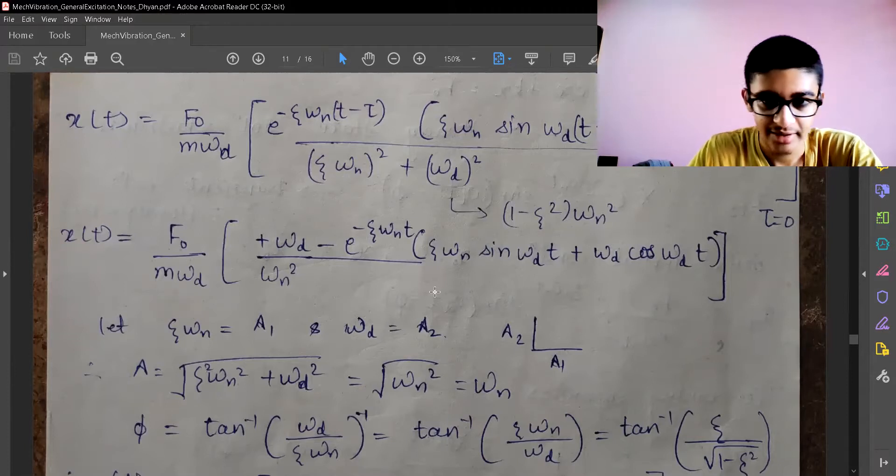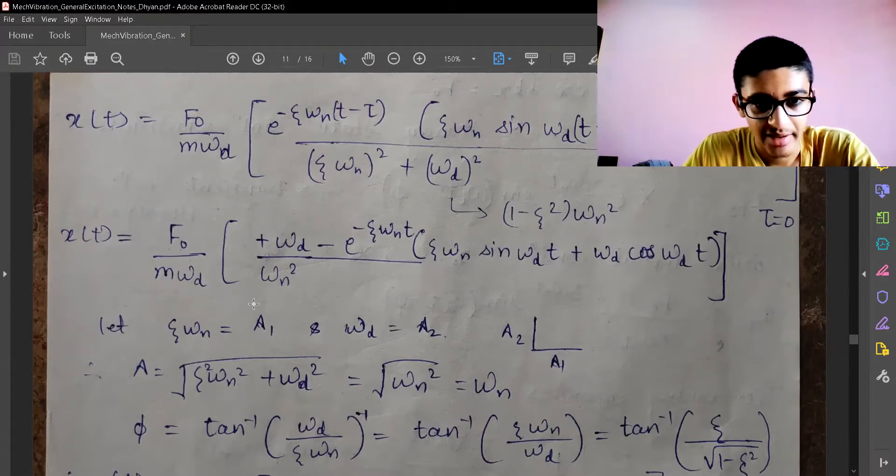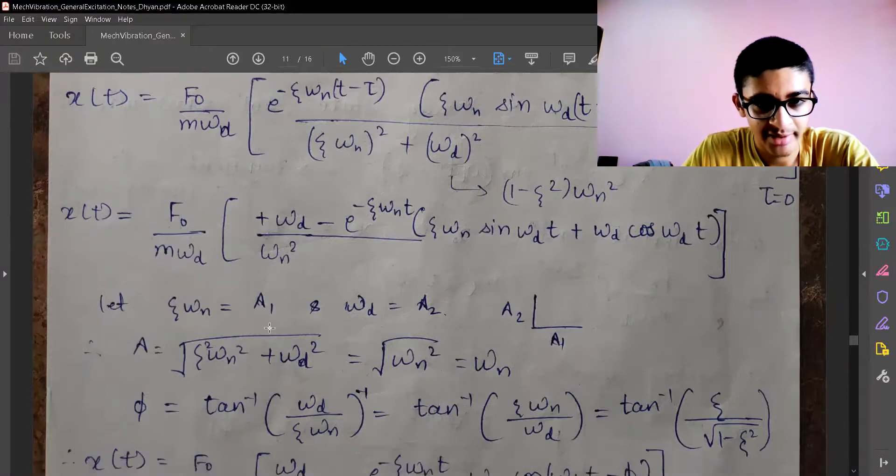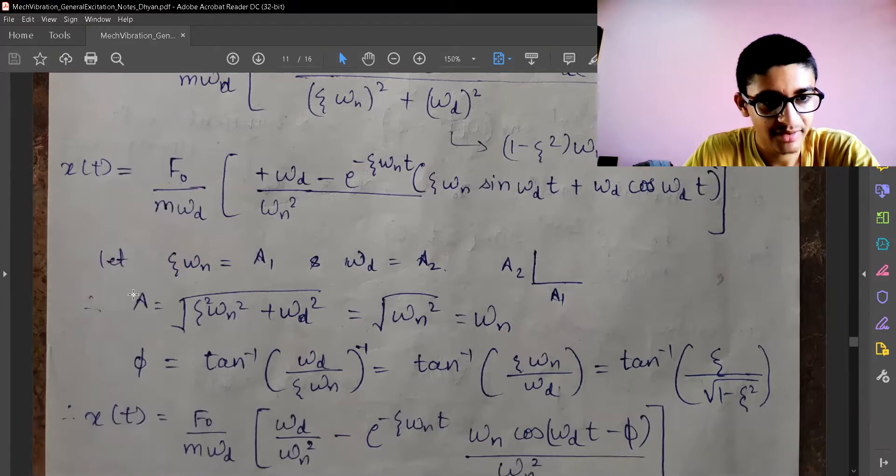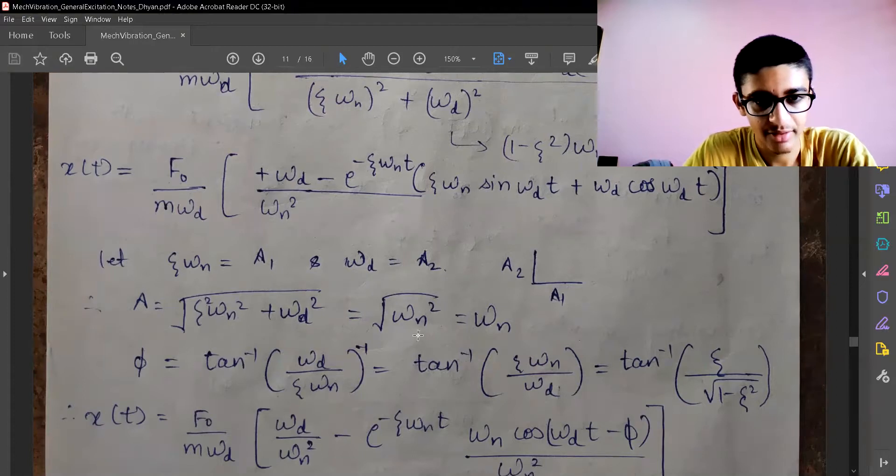We can convert it to simpler terms where we have sine and cos terms only. Let's say we are taking theta*omega_n equal to a₁ and omega_d equal to a₂, and they are perpendicular. So a will be the square root of a₁ squared plus a₂ squared.